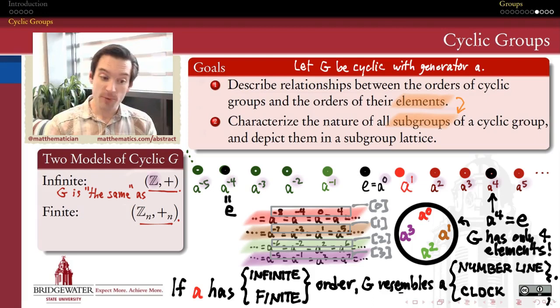Infinite cyclic groups all look just like the integers under addition, like the number line, with the role of the exponents on our generator playing the role of the integers. Likewise, every finite cyclic group can be envisioned as one of these clock groups, addition mod n groups on the integers, where the role of those equivalence classes mod n is played by the exponents on the generator for our cyclic group.